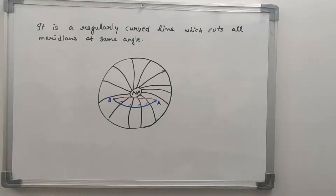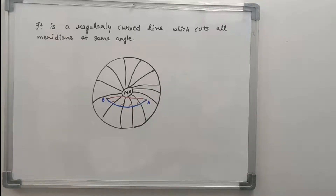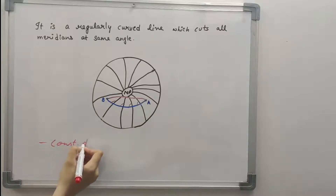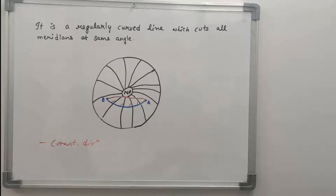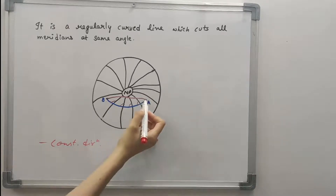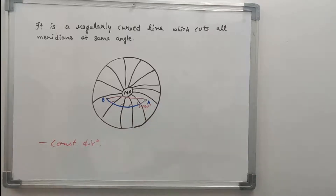Only one rhumb line can be drawn between any two points. The most important property of a rhumb line is that it is the line of constant direction. This simply means that we will always get the same track direction when following a rhumb line track. For example, if the track direction at A is 260 degrees and we keep traveling in this direction, we would reach point B by following the rhumb line.